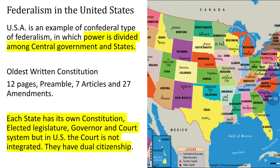Another important feature is that in the USA there are two types of citizenship — it is called dual citizenship. It is different at the center level and different at the state level. For example, if a person in Texas moves to New York, they will have to acquire the new state's citizenship.